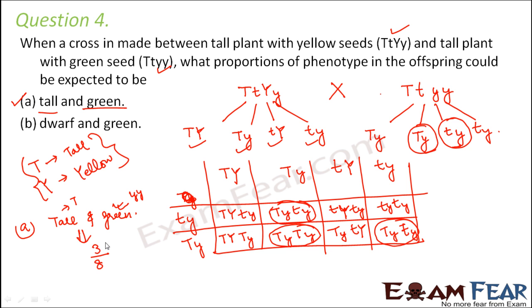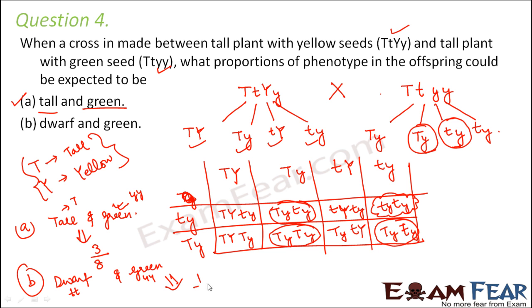So 3/8 of the offspring are going to be tall and green. The next part asks about dwarf and green. To be dwarf, there must be two small t's together, and for green, two small y's together. Only one combination, ttyy, satisfies both criteria. So 1/8 of the proportion would be dwarf and green, and 3/8 would be tall and green.